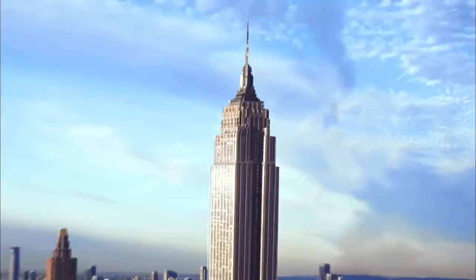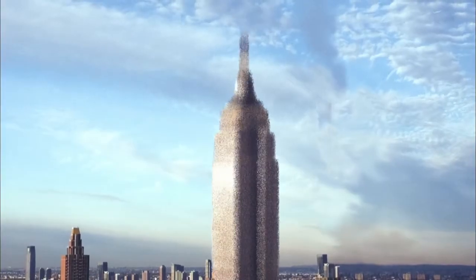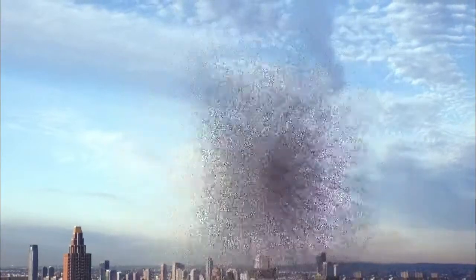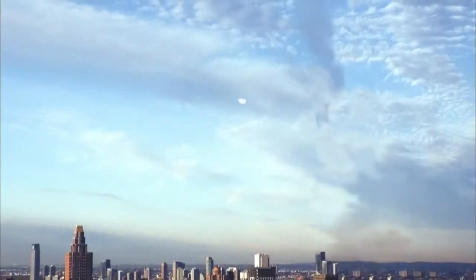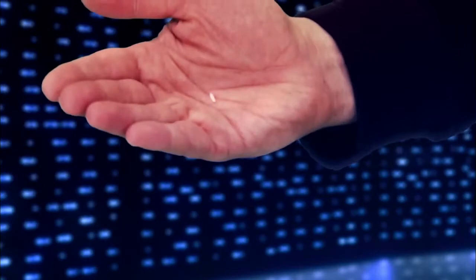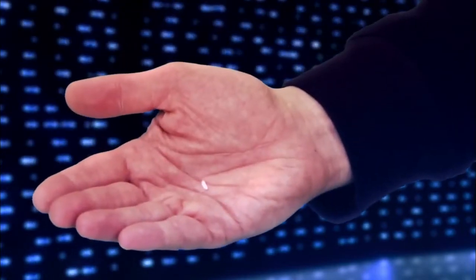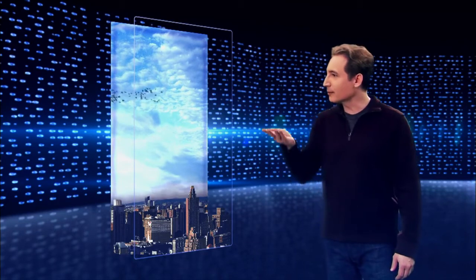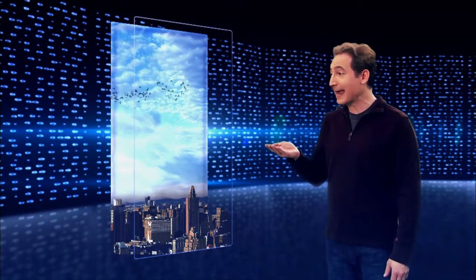In fact, if you removed all the space inside all the atoms making up the stone, glass and steel of the Empire State Building, you'd be left with a little lump about the size of a grain of rice, but weighing hundreds of millions of pounds. The rest is only empty space.